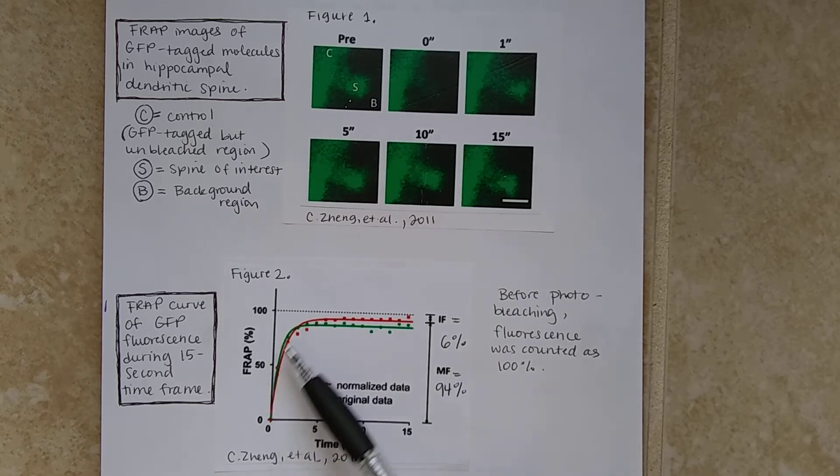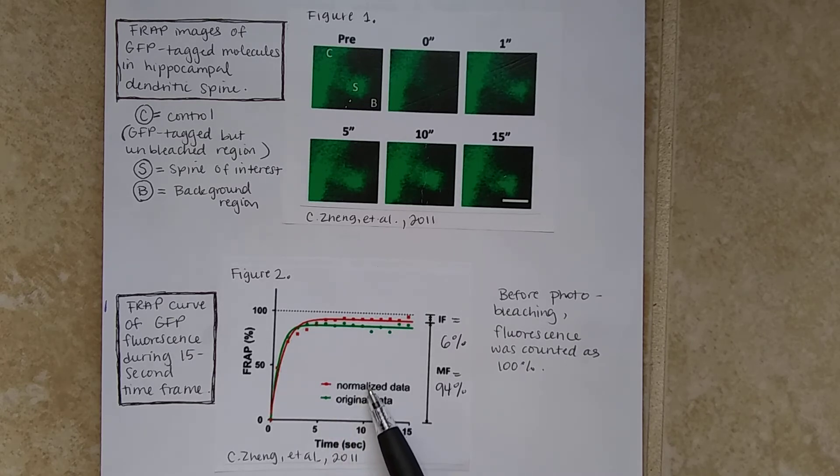So we can see two curves here, there's the original data, which is what they did, and the normalized data. And what this means is, the pre-bleach intensity is set to a standard amount, and this is just to be able to compare the data across experiments.